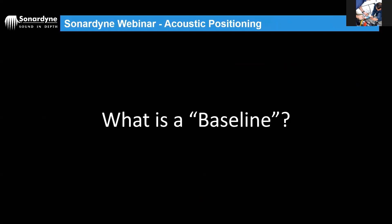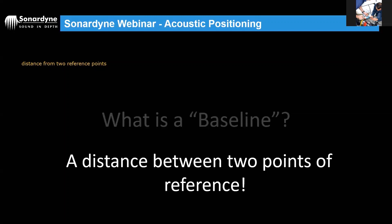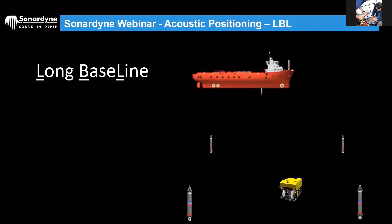'Known distance between two points' — very good. 'Range between two known points,' 'line between two points' — I like the word known. Known positions give us a reference, a start point to measure from. These are all the same thing: a distance between two points of reference.